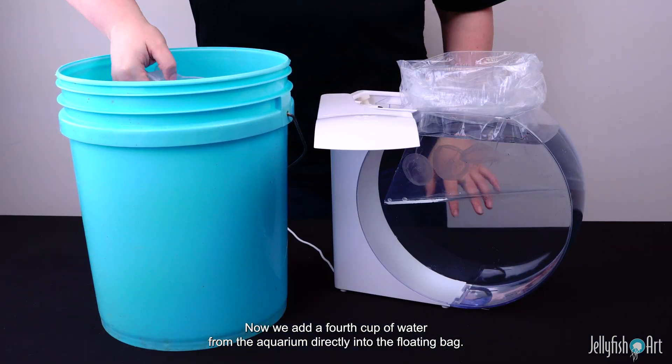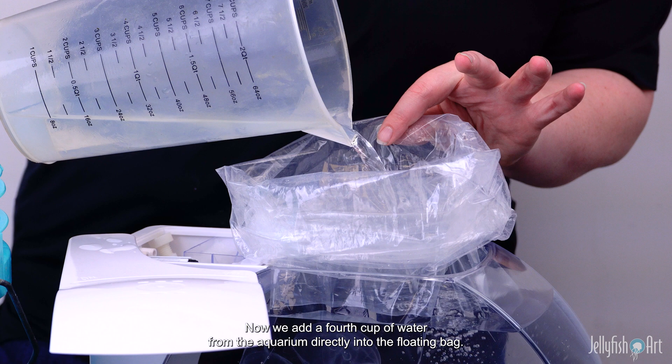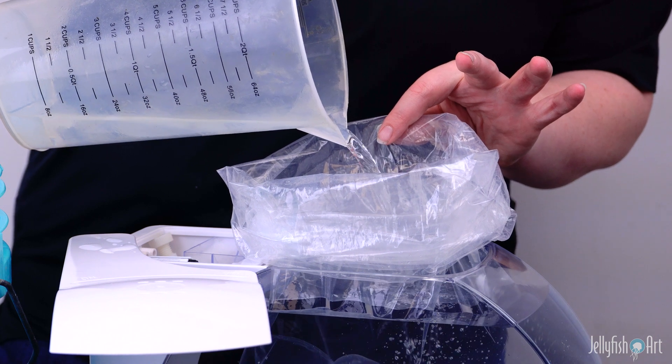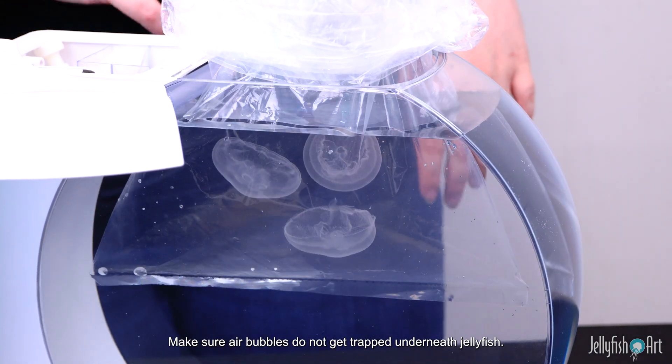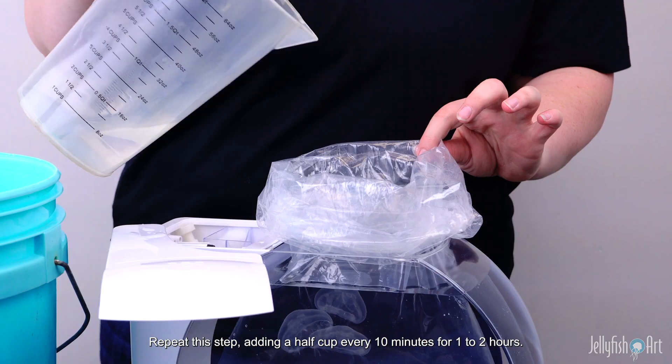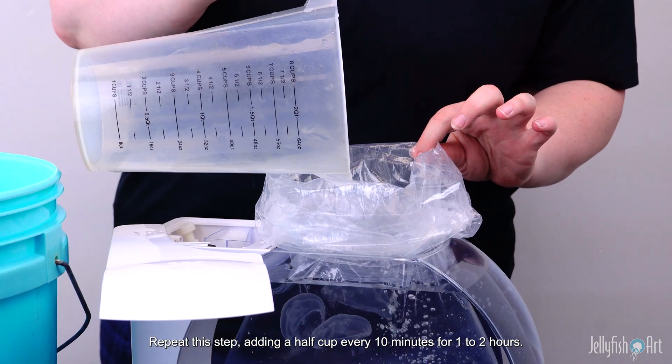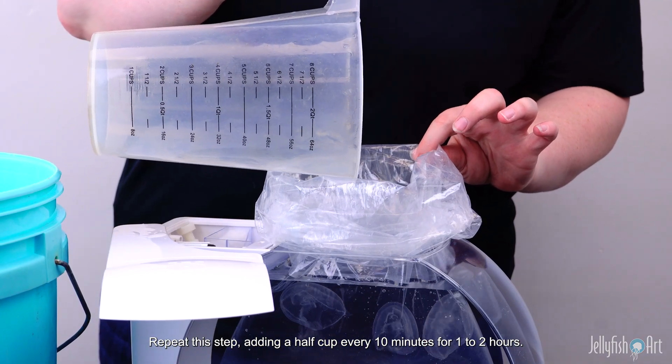Now we add a fourth cup of water from the aquarium directly into the floating bag. Make sure air bubbles do not get trapped underneath jellyfish. Repeat this step, adding a half cup every 10 minutes for one to two hours.